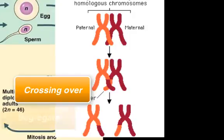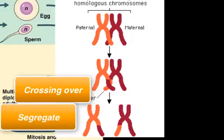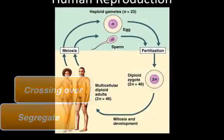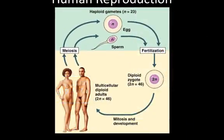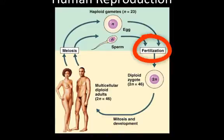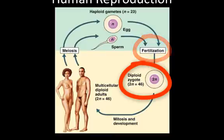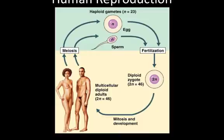Those homologous chromosomes segregate into individual gametes. Those gametes have to come together in a process known as fertilization to create a brand new cell — the gene combination of which has never existed before in nature. This is now a diploid zygote, and that zygote will undergo mitosis, development, and grow into a new organism — in this case, a human being.